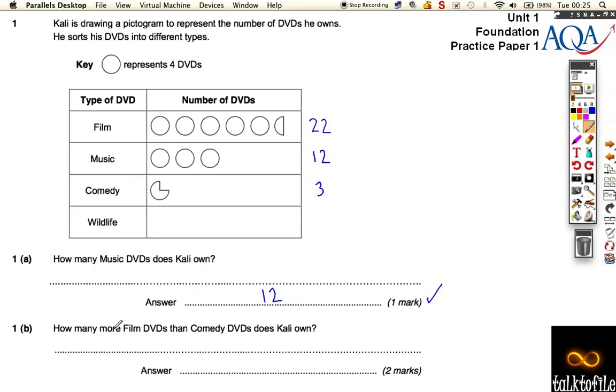And then part B says, how many more film DVDs than comedy DVDs does Kali own? Well I kind of preempted that because I've already worked this out. So what we've got to do here is we need to do the number of film DVDs he owns, which is twenty-two, subtract the number of comedy DVDs, which is three. It's a mark for picking off those numbers and doing a subtraction, and then just calculating the answer which was nineteen for the second mark. Nice easy start to the paper.